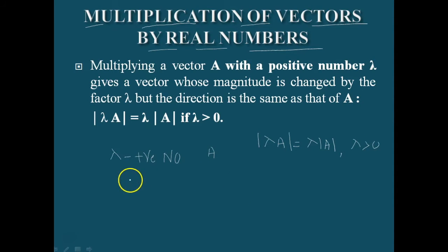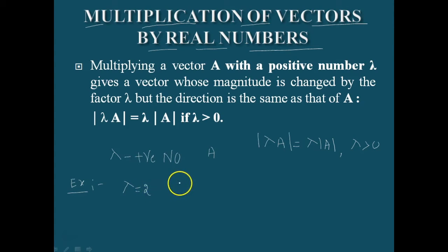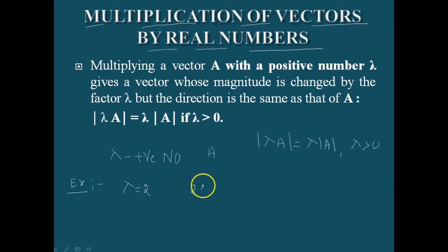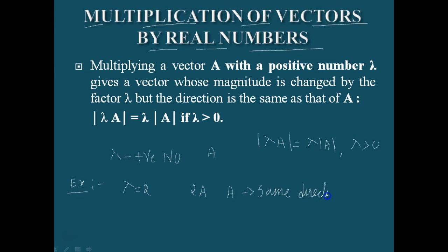For example, consider a simple example for multiplication of vectors. If A is multiplied by 2, let delta be 2, a positive number. The resultant vector will be delta into A, which is 2A. This 2A and A are having the same direction — there is no change in the direction of vectors.